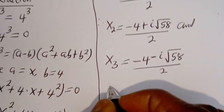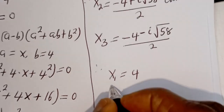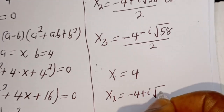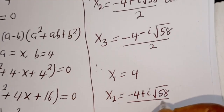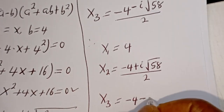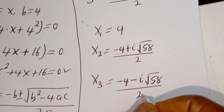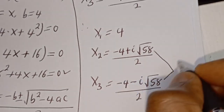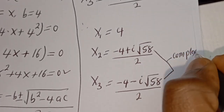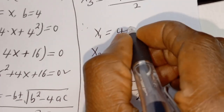Our final answers are: s₁ is equal to 4, s₂ is equal to minus 4 plus i root of 48 over 2, and s₃ is equal to minus 4 minus i root of 48 over 2. You can see that we have two complex roots and s₁ is the only real root.